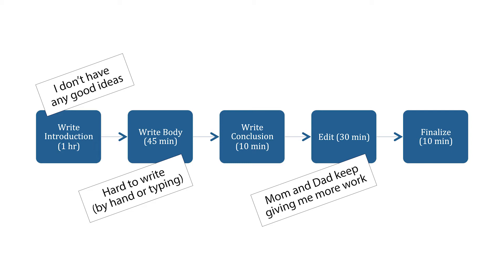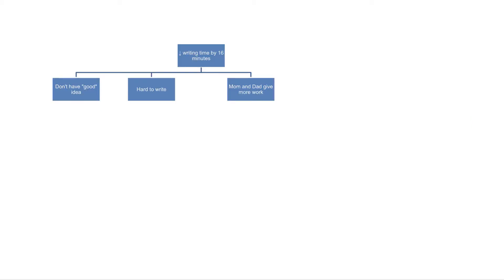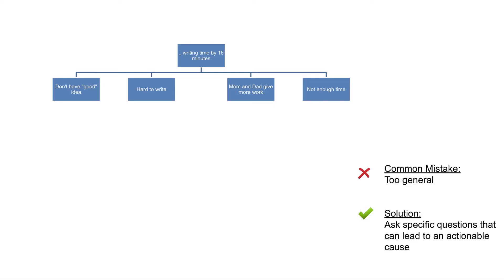We continue our brainstorm by thinking of other potential causes. My son says he needs time. It's a very common mistake to stop at causes that are too general — not enough time, poor communication, lack of accountability. Those don't have enough detail for us to eliminate the problem. So we drill to the next level of why, beginning step four.